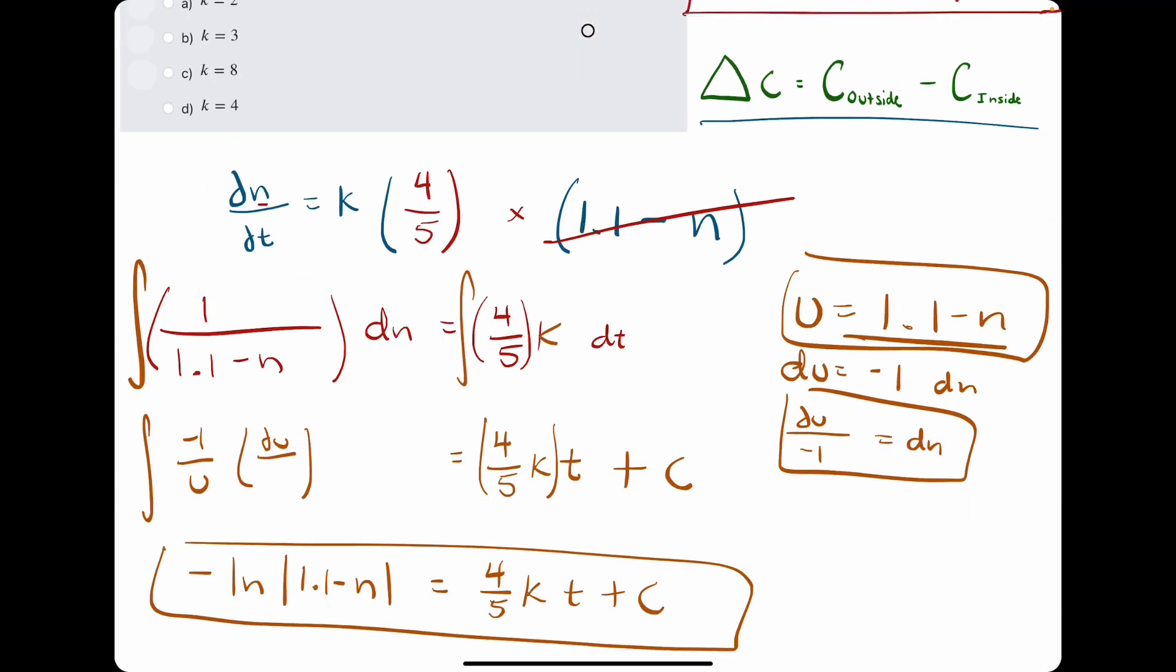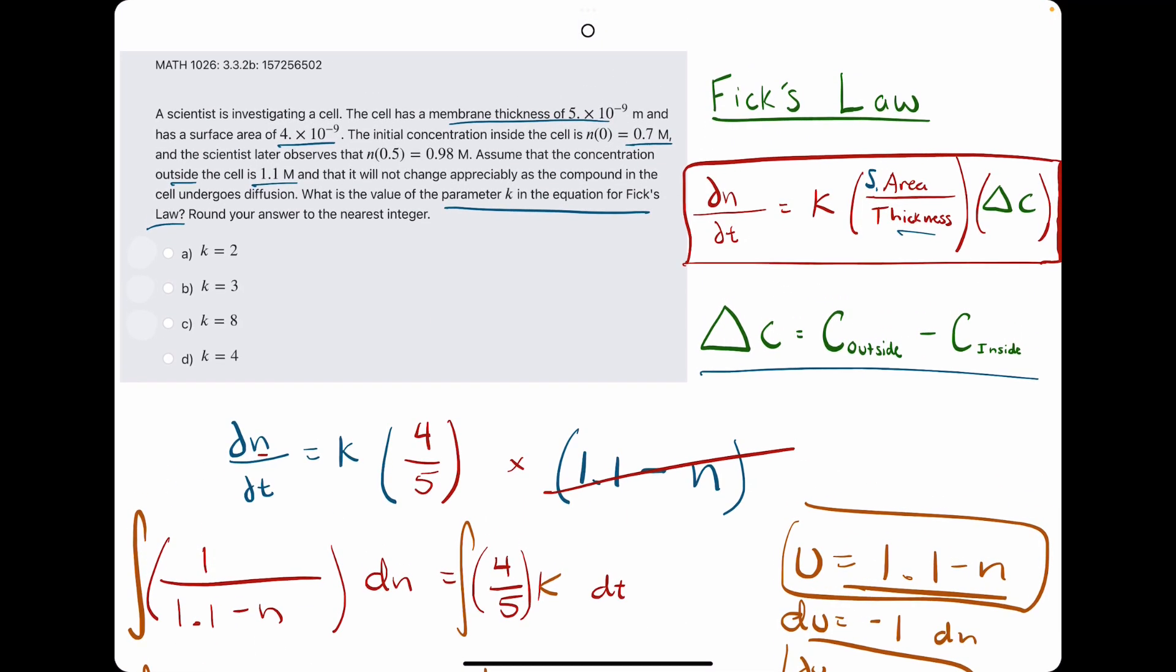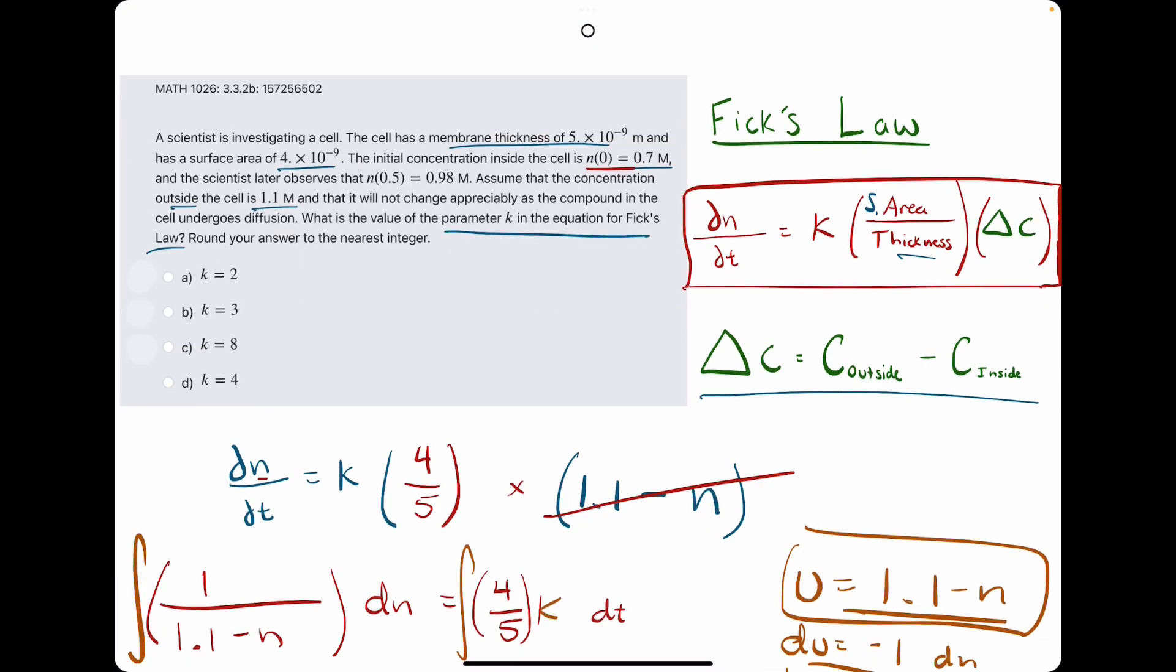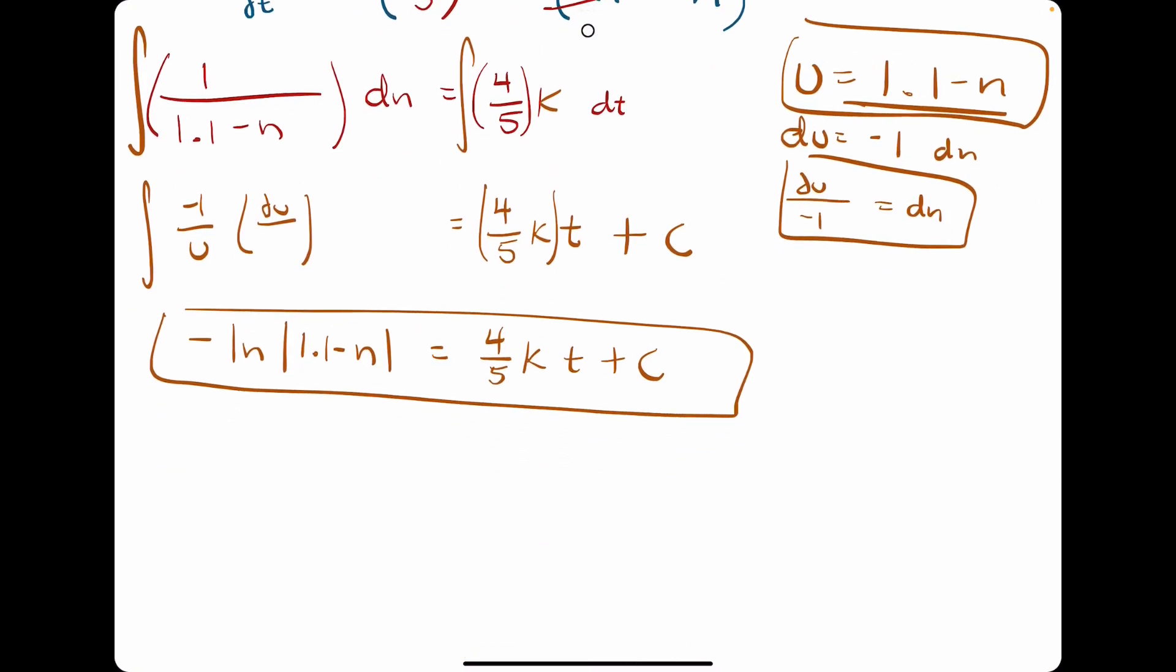So now what else do they give us? They tell us that the initial concentration, the initial value, n of 0, is 0.7. That means when t is 0, n is 0.7. So what we'll do is something a little different than usual.